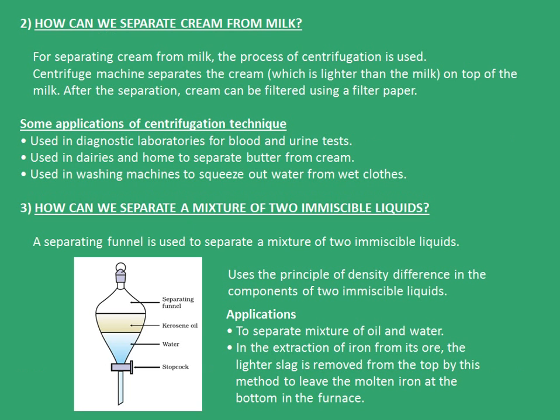The next one is: how can we separate cream from milk? For separating cream from milk, the process of centrifugation is used. The centrifuge machine separates the cream, which is lighter than the milk, on top of the milk. After the separation, cream can be filtered using a filter paper.